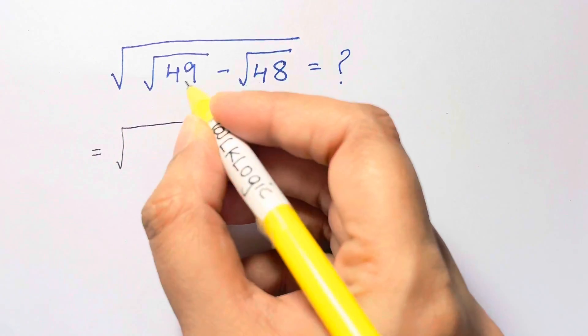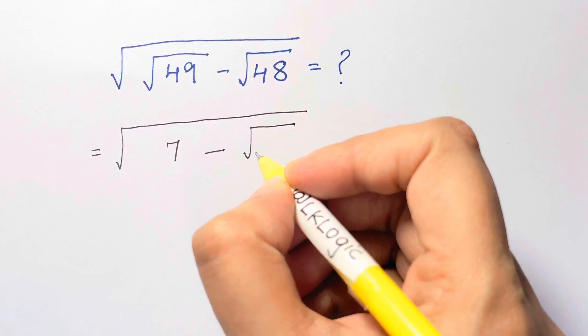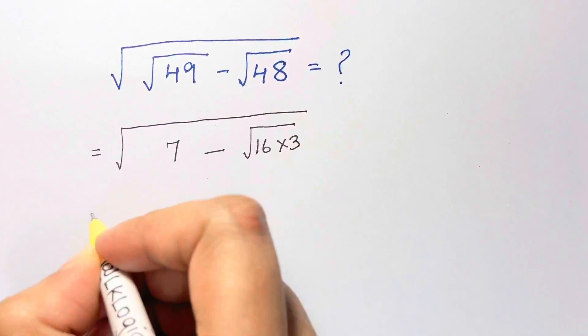As we know, square root of 49 is 7 minus square root of 48, which can be written as 16 times 3. So let's split them.